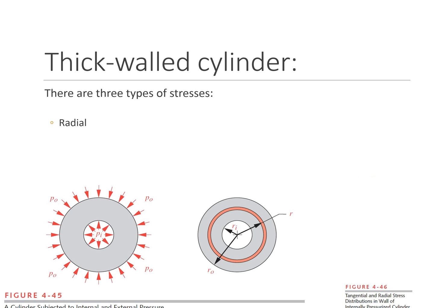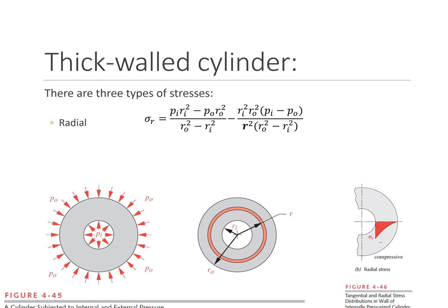Let's consider radial stresses. The radial stress has the same constant term, but now it's subtracting the variable term to give us a compressive distribution. Notice the maximum stress state is going to occur at the inside edge — it's the maximum compressive stress of the radial stresses occurring within the cylinder. Again, there's a simplification if the outside pressure is equal to zero, and the equation simplifies quite a bit.